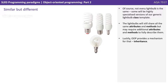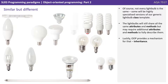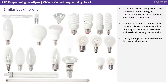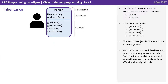Not every light bulb is the same. Some will be highly specialised versions of our generic light bulb class template. The light bulbs will still share all the same attributes and methods, but may require additional attributes and methods in order to fully describe them. Luckily, OOP provides a mechanism for that, and it's called inheritance.